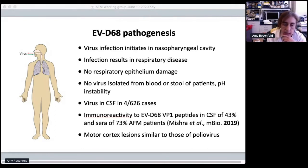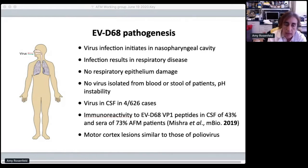EV68, by looking at the biophysical properties of the particle, is very sensitive to pH. It is unable to pass through the alimentary tract and infect cells because it falls apart. So we don't find or isolate infectious virus from the stool, though you may find remnants of RNA.